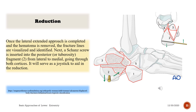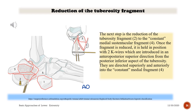Once the extended lateral approach is completed and the hematoma is removed, the fracture lines are visualized and identified. A Schanz screw is inserted into the posterior fragment from lateral to medial, going through both cortices, to serve as a joystick to aid in reduction. The tuberosity fragment is then reduced to the constant medial sustentacular fragment and held in position with two K-wires introduced in an antero-posterior superior direction from the posterior-inferior aspect of the tuberosity into the constant medial fragment.